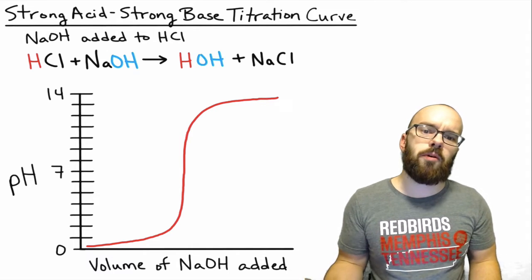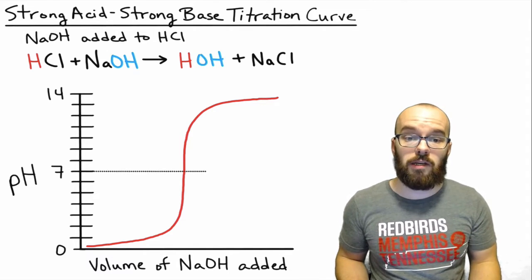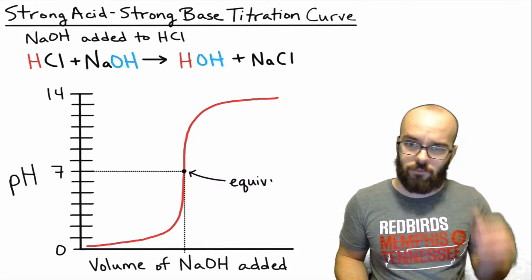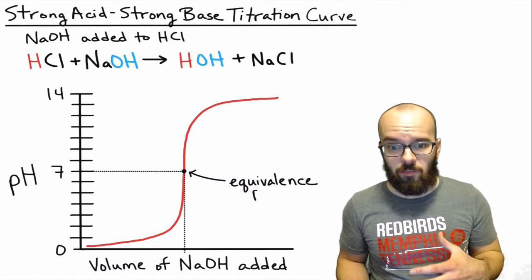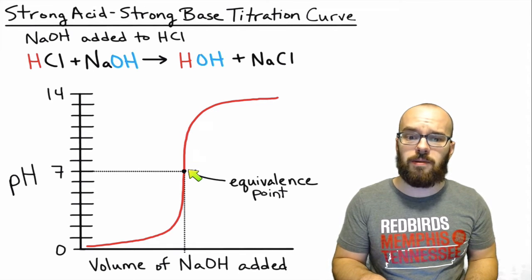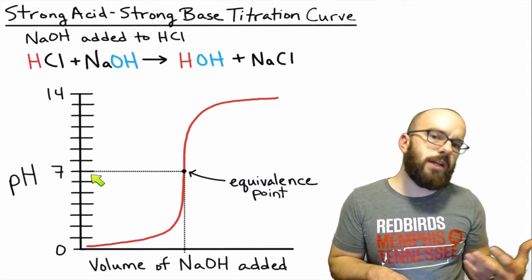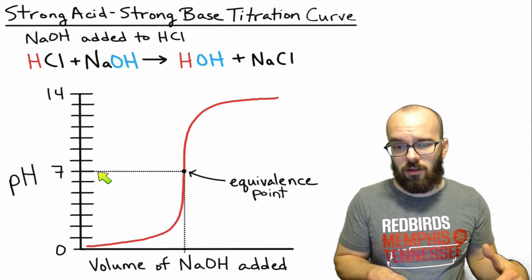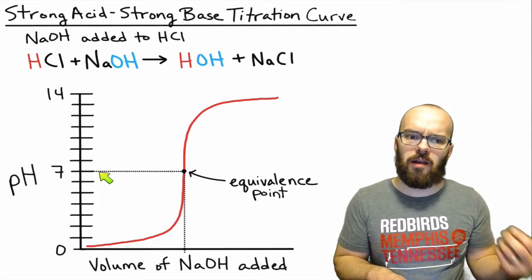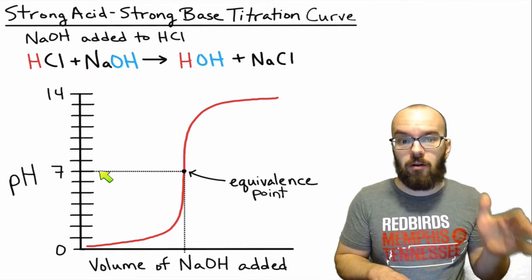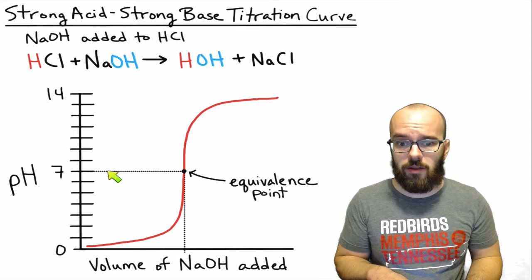There's one really important part of this titration curve that we need to look at — that's what's called the equivalence point. For a strong acid and a strong base that equivalence point is actually going to be at a pH of 7. If you're using a weak acid or a weak base that equivalence point will not be at 7; it'll depend on what the pKa value is for that weak acid or weak base, but for now we're just going to look at strong acid and strong base.